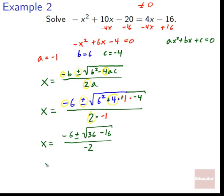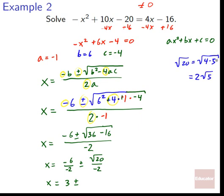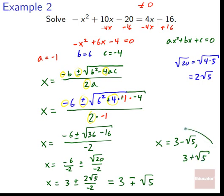So 2 times −1 becomes −2. We have x = −6/−2 ± √20/−2, which gives x = 3 ± (2√5)/(−2). The negative on the denominator hits the ± but that just causes plus to become minus and minus to become plus, so it's the same set of values. Our answers are x = 3 − √5 and x = 3 + √5 — the solutions to that quadratic.